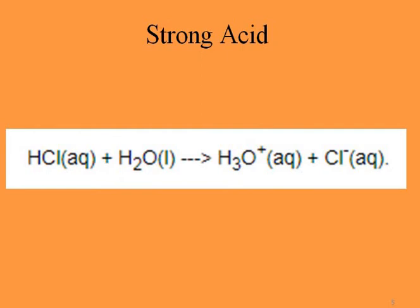Hydrochloric acid is a strong acid, which means that when dissolved in water it dissociates completely into its ions. HCl dissociates into H⁺ and Cl⁻. Since H⁺ is unstable, it is surrounded by water molecules and becomes H₃O⁺, which we call the hydronium ion. This reaction is irreversible — HCl is completely dissociated with no remaining HCl, and the pH is less than seven.